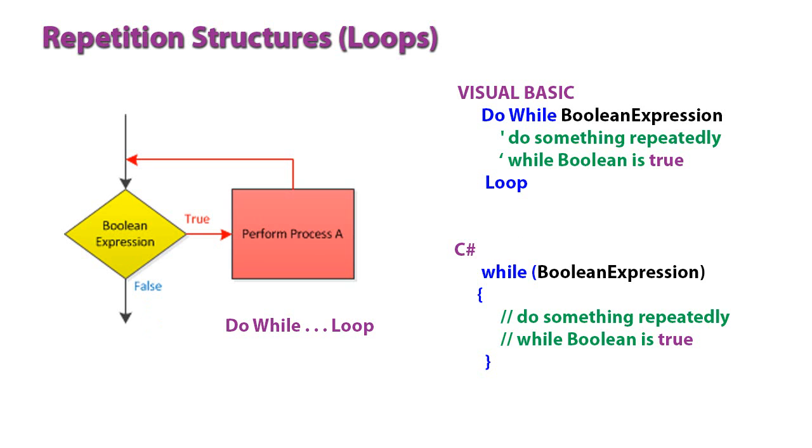So in Visual Basic, we have the do-while followed by some Boolean expression. And then the process we want to have repeated within that loop. And it ends with the word loop.